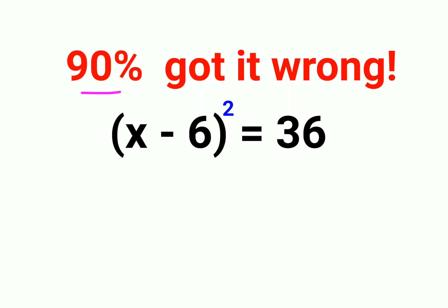Okay, so the reason for that was, see here when you have something like this, right? X minus 6 the whole square equals to 36.